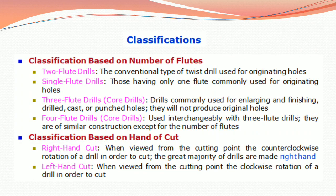Classification based on number of flutes. Two-flute drills are the conventional type of twist drill used for originating holes. Three-flute drills, also called single-flute drills, are those having only one flute, commonly used for originating holes. Core drills with three flutes are commonly used for enlarging and finishing drilled, cast, or punched holes; they will not produce original holes.